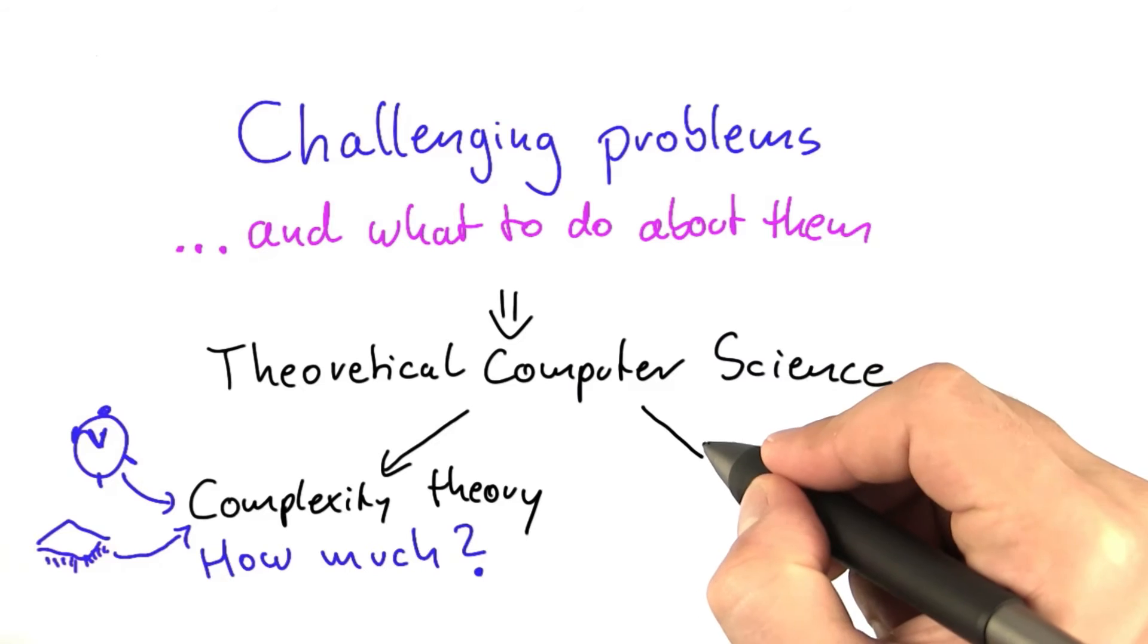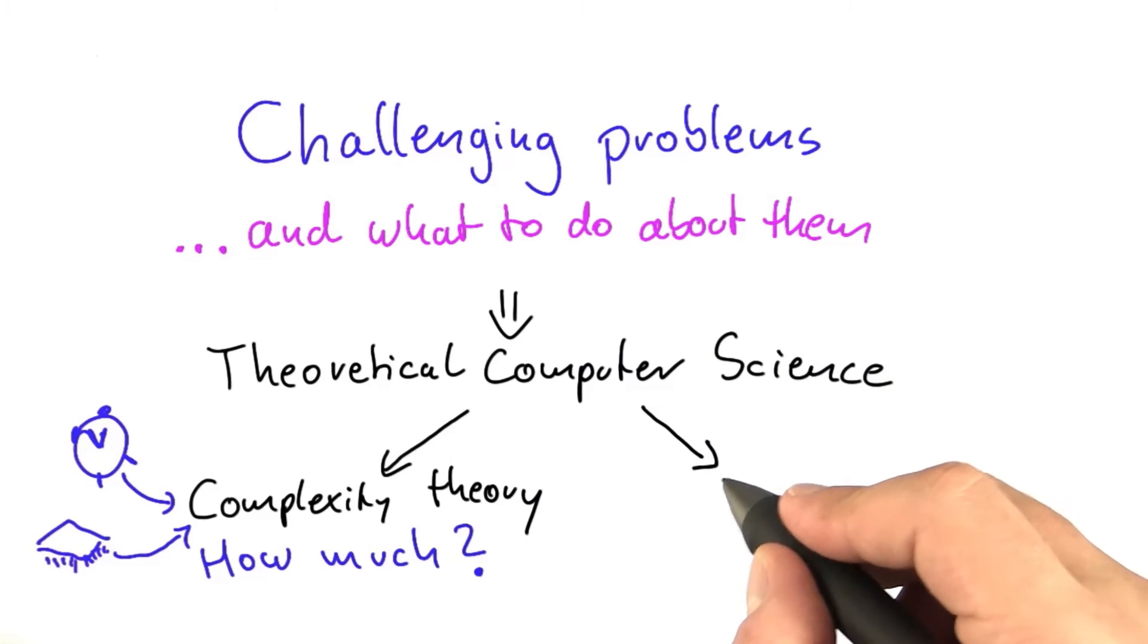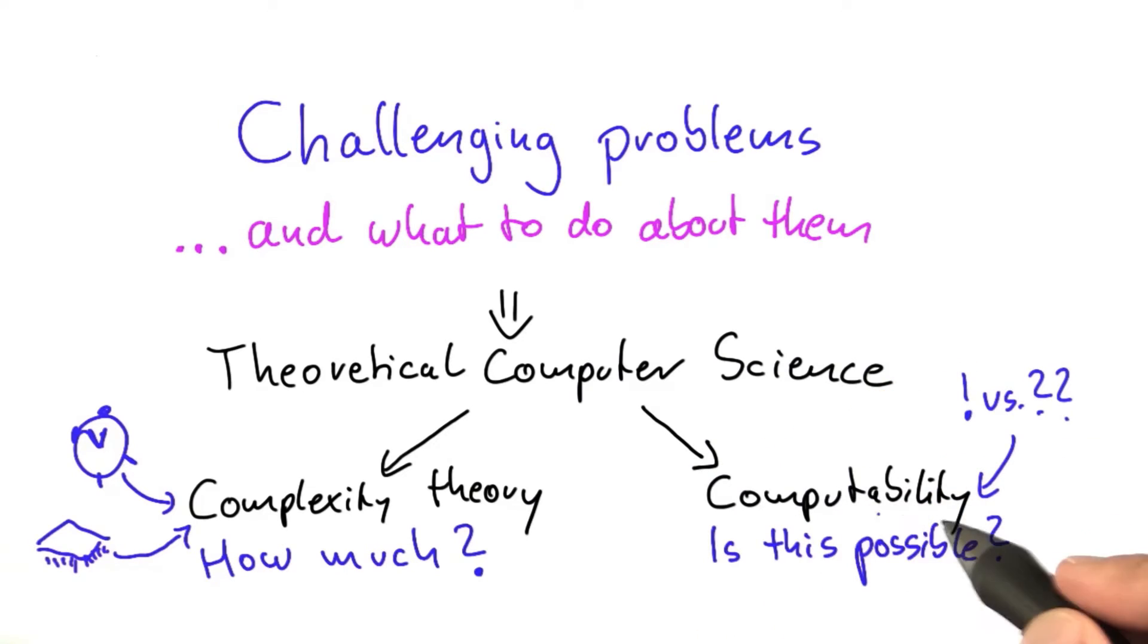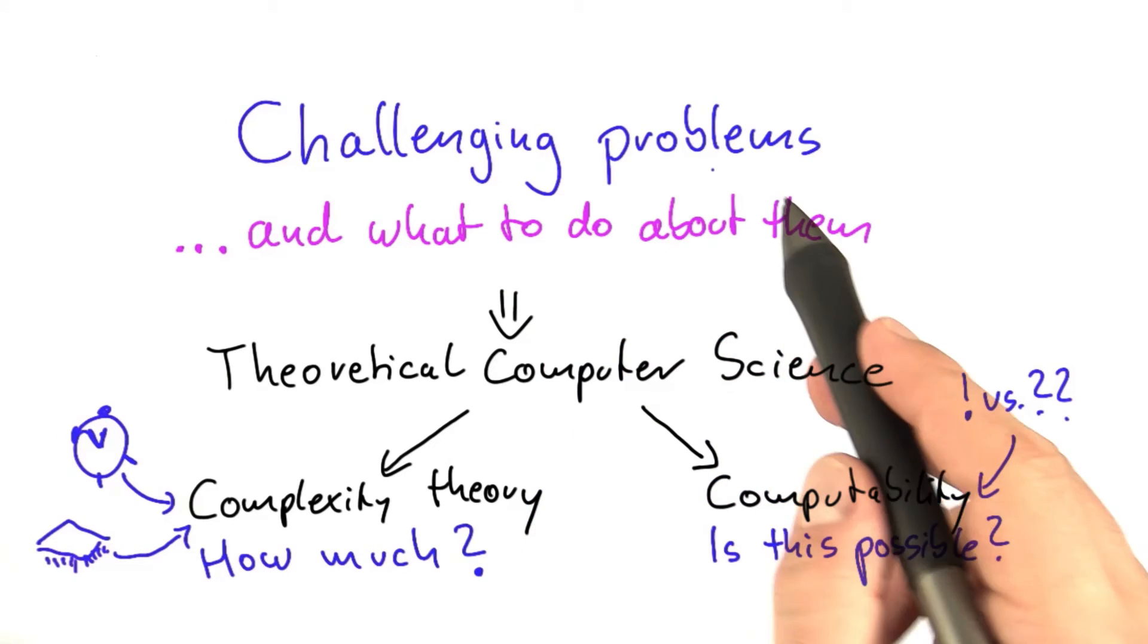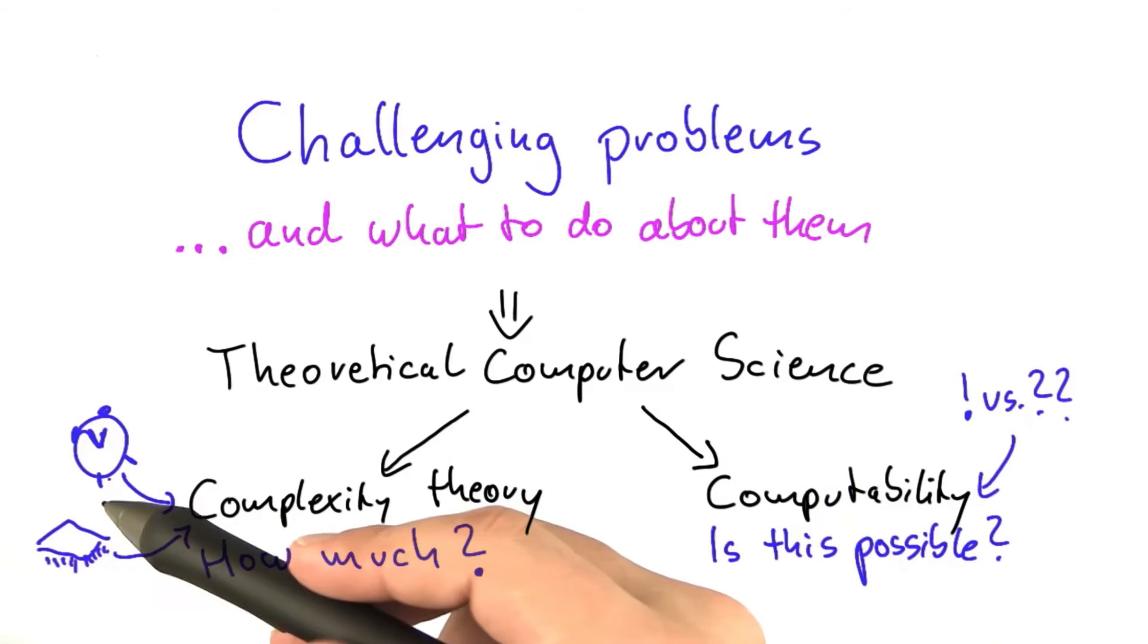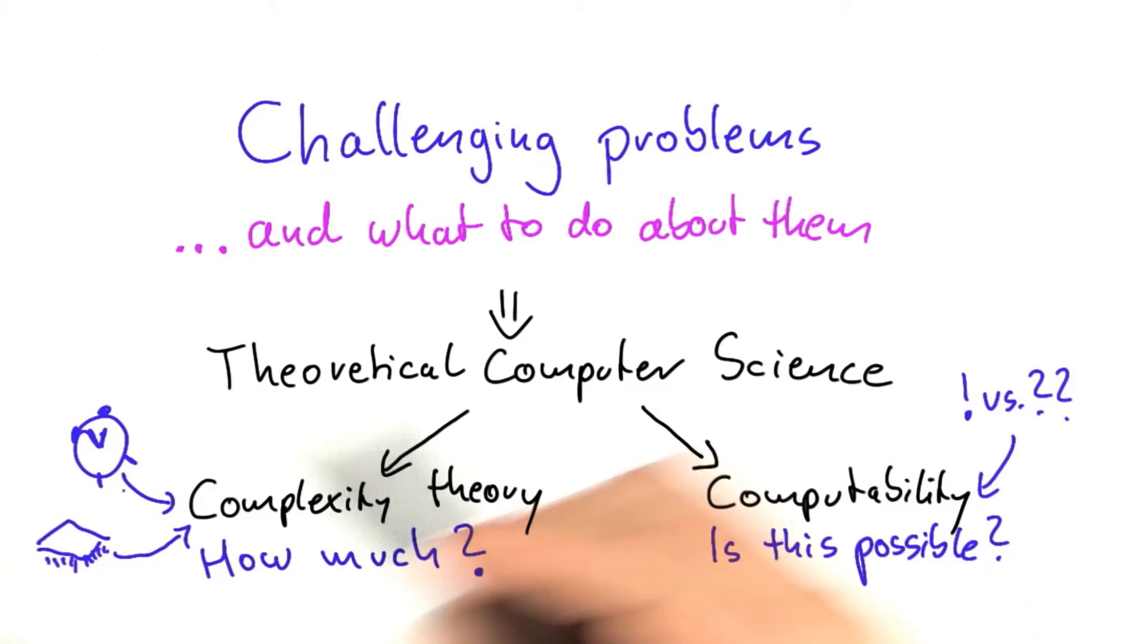The other part of theoretical computer science that we'll be looking at is called computability. Computability asks a more fundamental question: can a computer solve a given problem at all, given as much time and as much memory as you want?